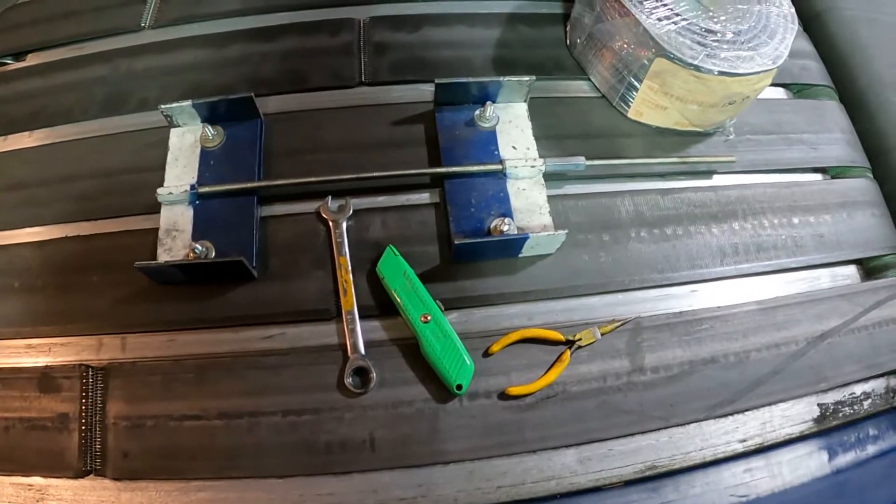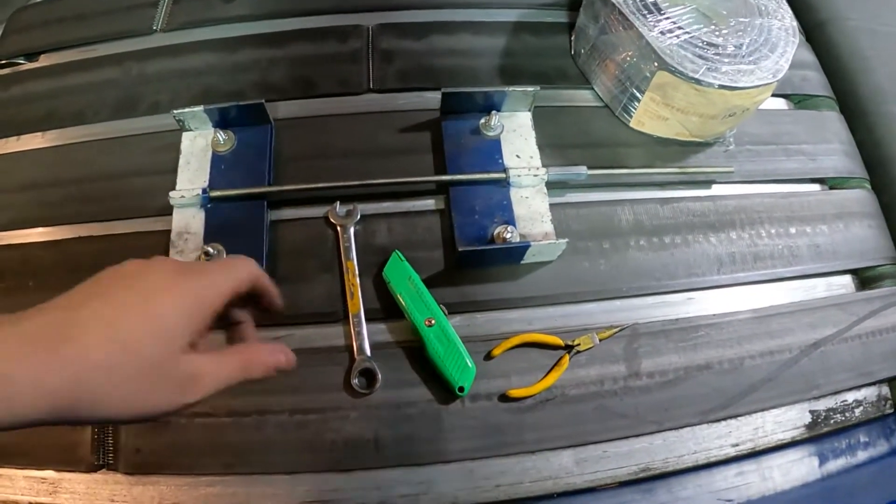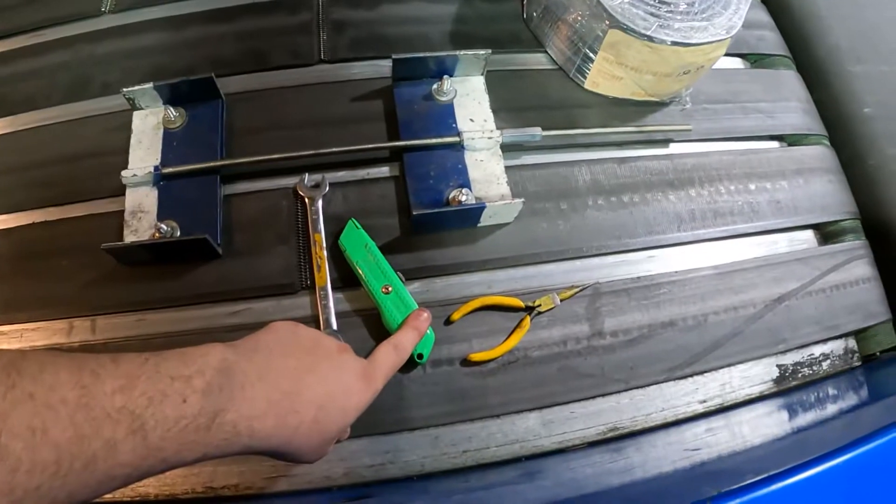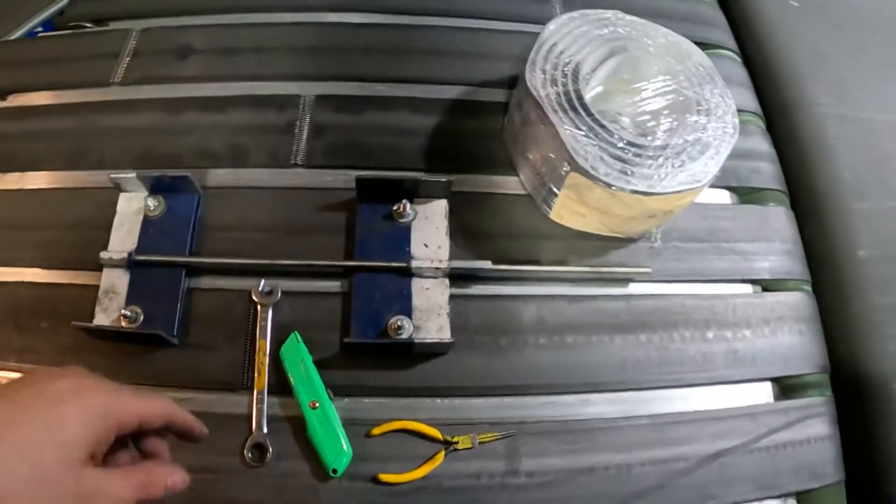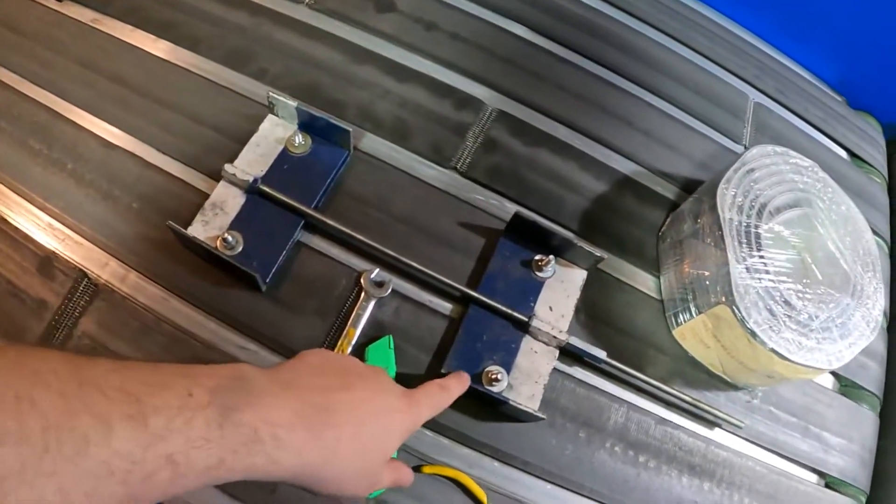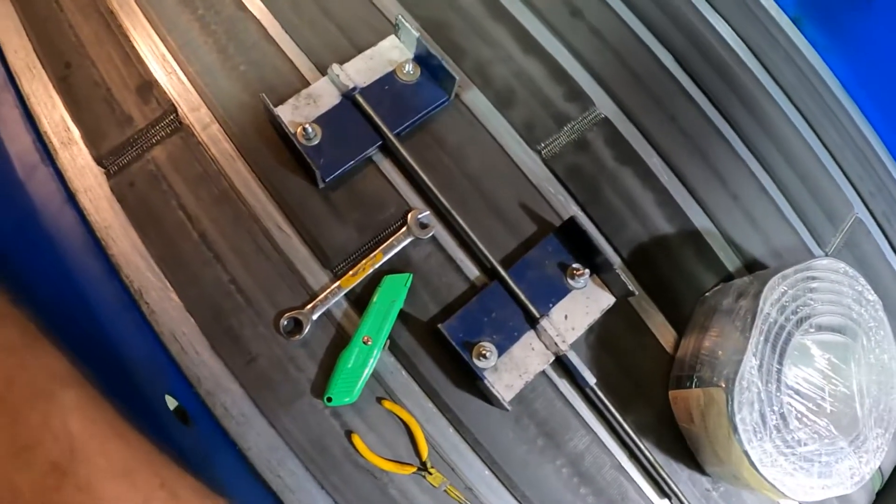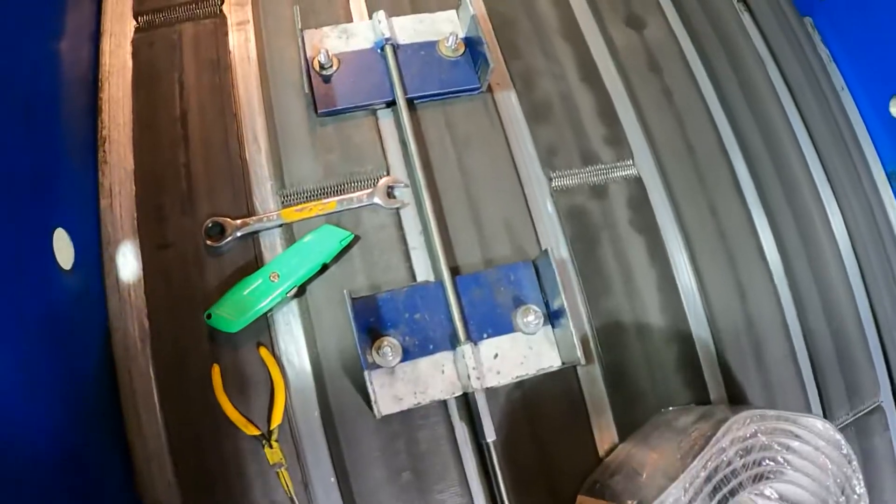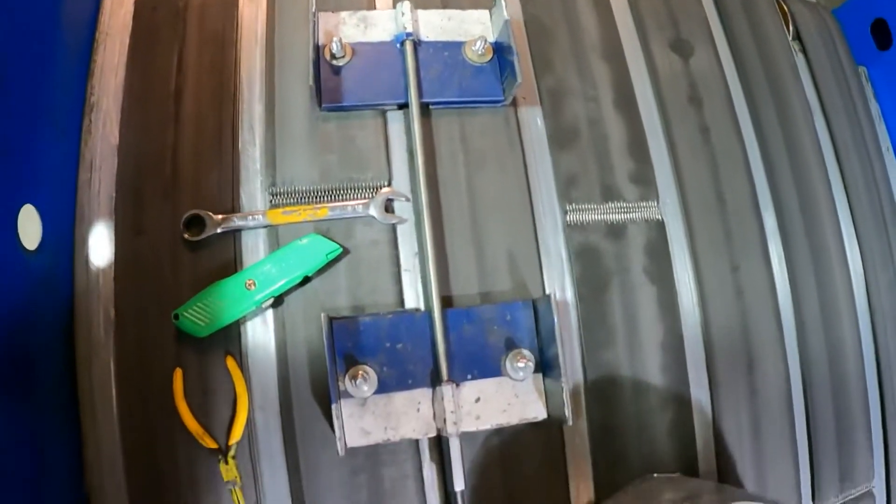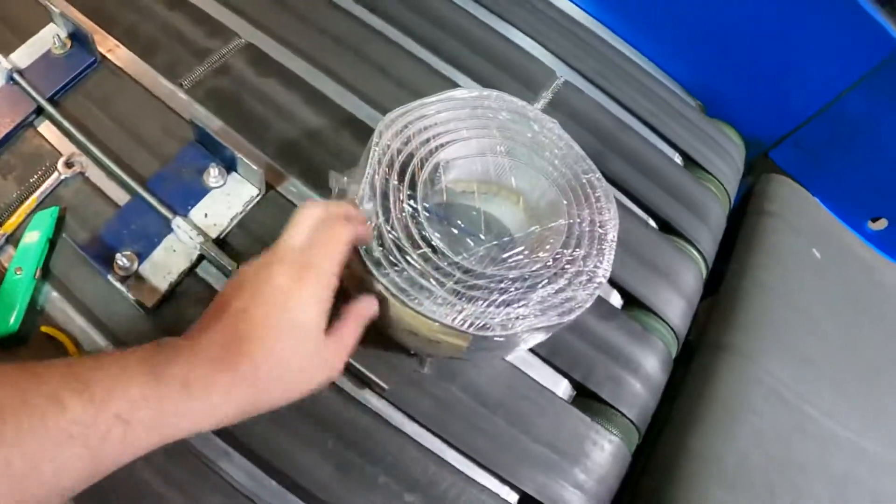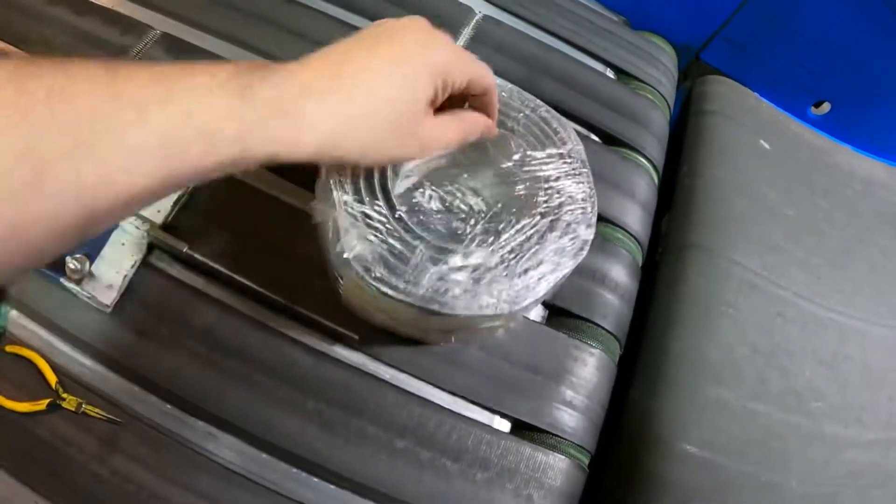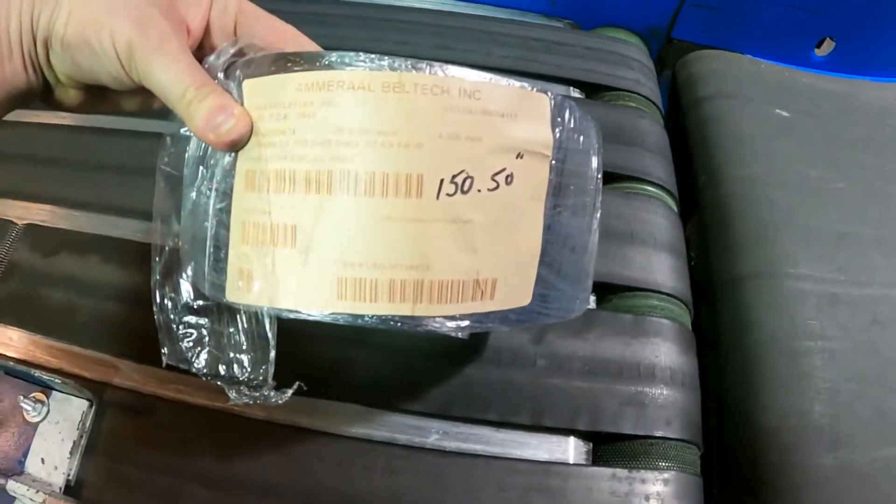These are the tools you're going to need to change the transfer belt: a 9/16th wrench, box knife, pair of needle nose pliers, this is a belt stretcher which I'll show you how it works. We made the belt stretcher right here in house, and you need your spare belts. In this case for the long belt we're using a 150.5.